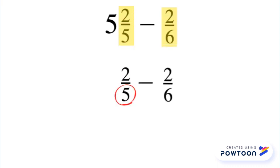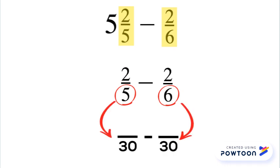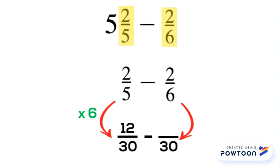30 is the least common multiple of 5 and 6, so we'll change these into equivalent fractions with like denominators of 30. 5 times 6 equals 30, so we have to multiply 2 times 6, and that gets us 12 thirtieths. Now 6 times 5 is 30, so we have to multiply this numerator by 5, and we get 10 thirtieths.